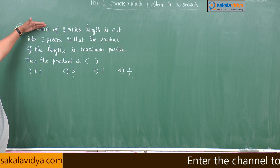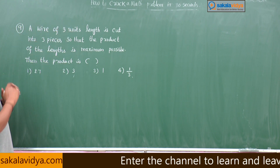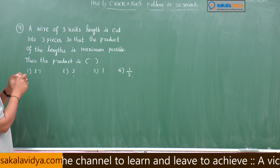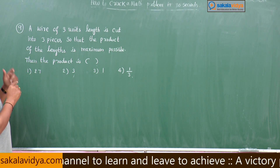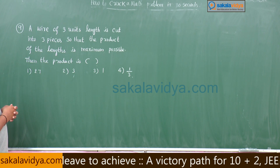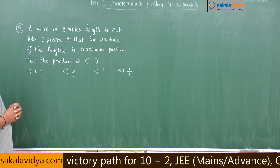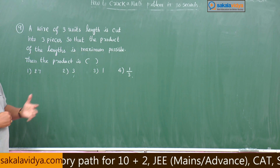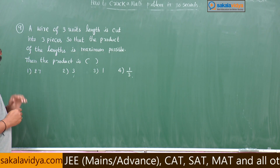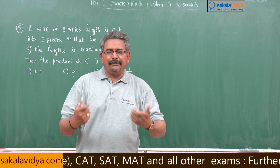A wire of three units length is cut into three pieces so that the product of the lengths is maximum. We have to find out the maximum product of the lengths of the three pieces. This problem is nothing but an application of maximum and minimum.